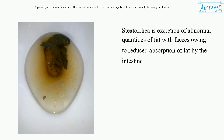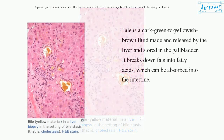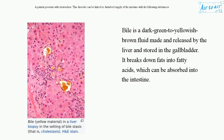Steatorrhea is excretion of abnormal quantities of fat with feces owing to reduced absorption of fat by the intestine. Bile is a dark green to yellowish-brown fluid made and released by the liver and stored in the gallbladder. It breaks down fats into fatty acids, which can be absorbed into the intestine.